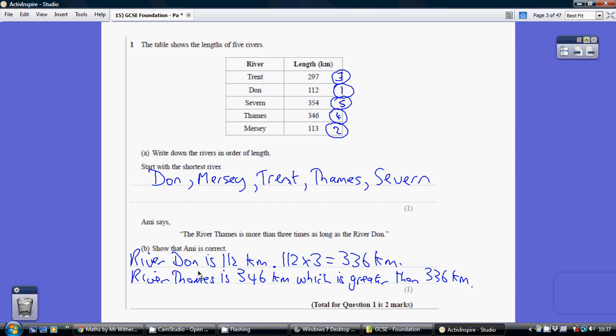So the River Don is 112 kilometres long. So three times that length is three times 112, which is 336. And since the River Thames is 346, which is bigger than 336, we've shown that the River Thames is indeed more than three times as long as the River Don.